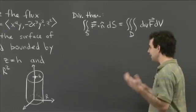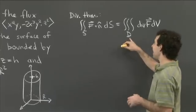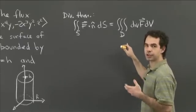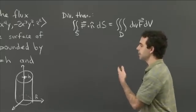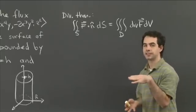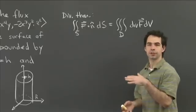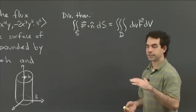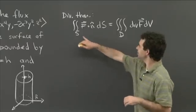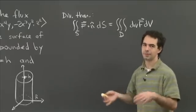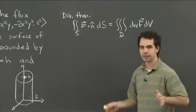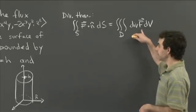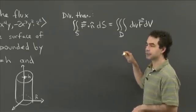This is nice because the solid region D is easier to grapple with than the surface we started with. It's just one solid piece, and it's easy to describe — especially in cylindrical coordinates, but also in rectangular coordinates. Whereas the surface S, if we wanted to parametrize it, we'd need to split it into three pieces, which is kind of a hassle. Also, the divergence of this field F is a lot simpler than the field itself.